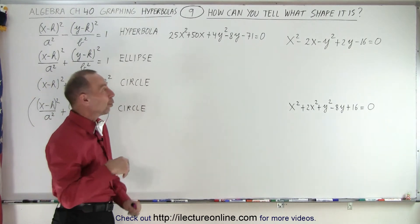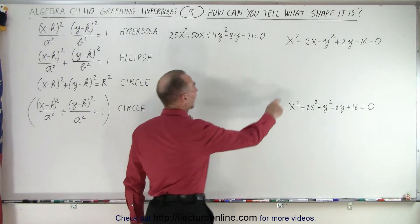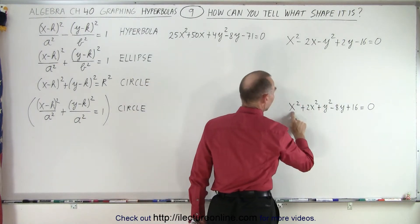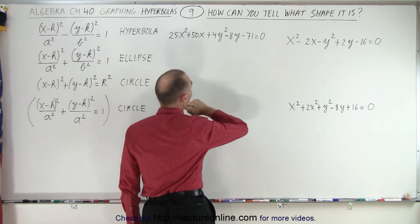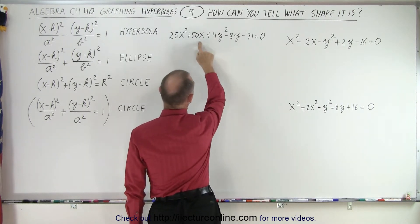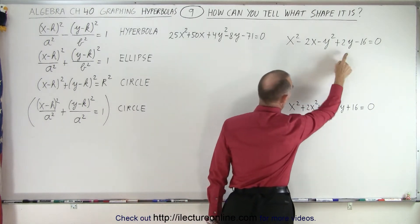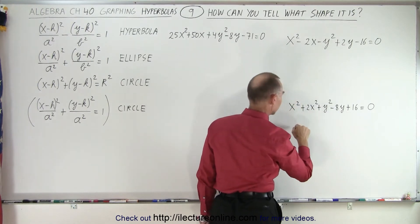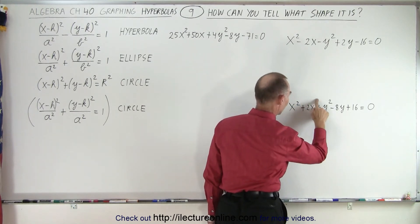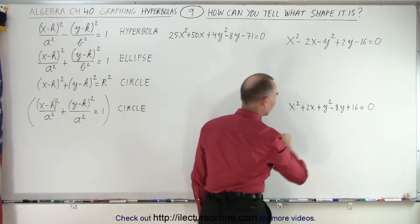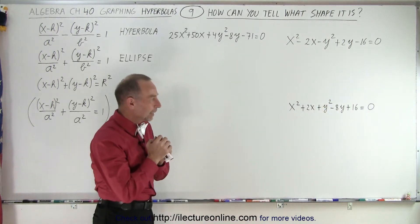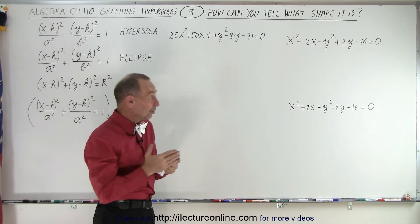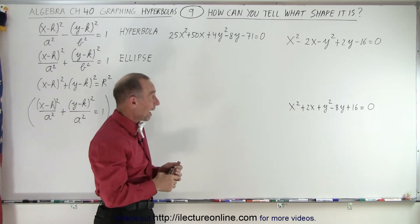You look at the x and the y-square terms. Notice you have an x-square and a y-square, an x-square and a y-square, an x-square and a y-square. You also have an x and a y, an x and a y, an x. Where am I? Oh, wait a minute. This should not be like that. This should be like this. Okay, an x and a y. So those are certainly either ellipses, circles, or hyperbolas.